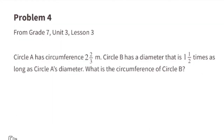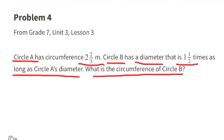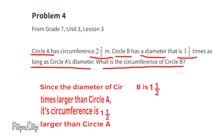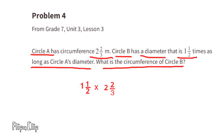Problem number 4 from 7th grade, Unit 3, Lesson 3. Circle A has circumference 2 and 2 thirds meters. Circle B has a diameter that is 1.5 times as long as circle A's diameter. What is the circumference of circle B? Since the diameter of circle B is 1.5 times larger than circle A's diameter, its circumference is also going to be 1.5 times larger than circle A's circumference. So we can multiply 1.5 times 2 and 2 thirds. That's the same as 3 halves times 8 thirds. That gives us 24 sixths, and 24 divided by 6 is 4. So the circumference of circle B is 4 meters.